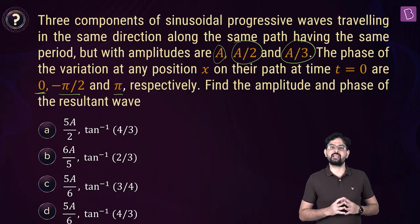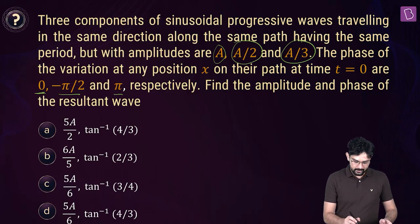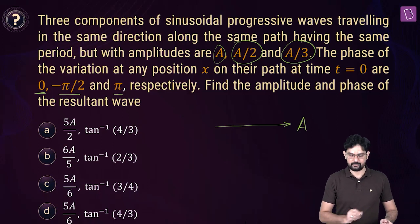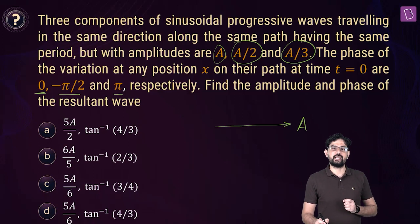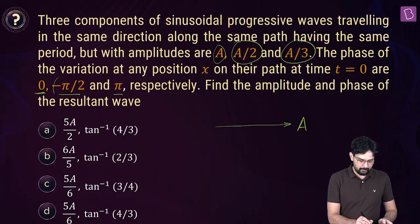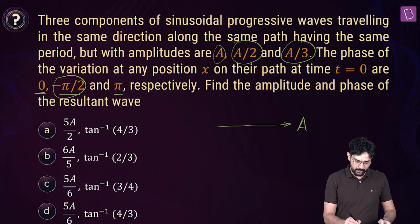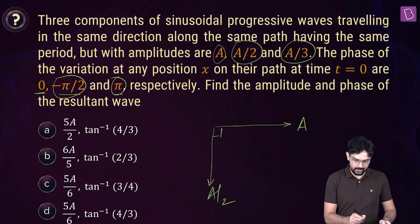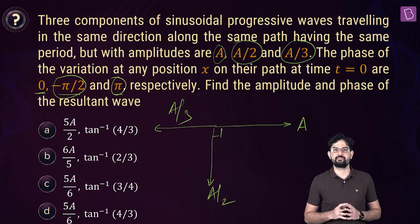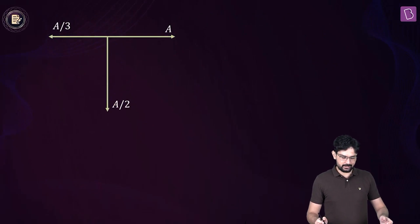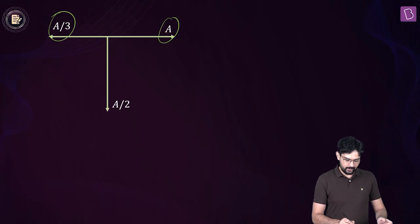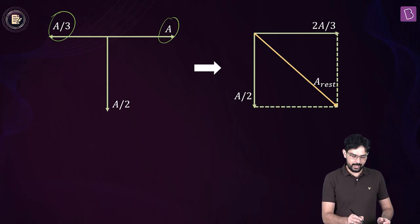Let's use the phase diagram. The first wave with amplitude A has phase 0 — shown along a reference direction. The second wave with amplitude A by 2 has phase minus pi by 2 — shown perpendicular and downward. The third wave with amplitude A by 3 has phase pi — shown in the opposite direction to the first. We can find the resultant of A and A by 3, which gives 2A by 3 along the direction of A.